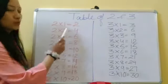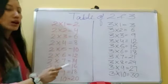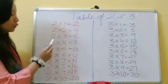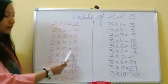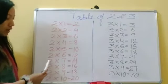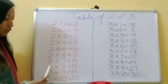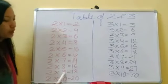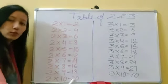Table of two: two ones are two, two twos are four, two threes are six, two fours are eight, two fives are ten, two sixes are twelve, two sevens are fourteen, two eights are sixteen, two nines are eighteen, two tens are twenty.